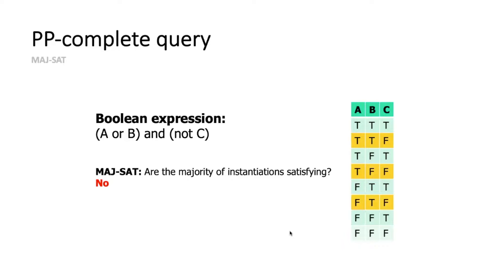The second prototypical query is MAJSAT, complete for the class PP — also known as the counting class. Here I want to know whether the majority of assignments are satisfying. So I really need to count. The answer in this case is no, because only three of the eight assignments satisfy the formula, which is less than a majority. Later I'll tell you about variants of this that get used in practice.